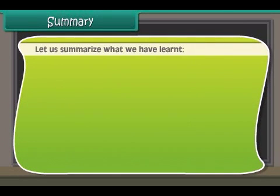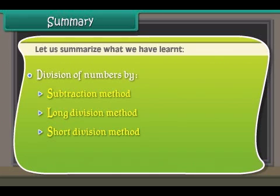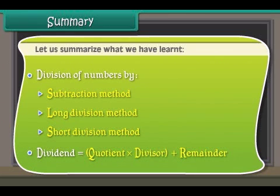Summary. Let us summarize what we have learnt. Division of numbers by subtraction method, long division method, short division method. Dividend is equal to quotient into divisor plus remainder.